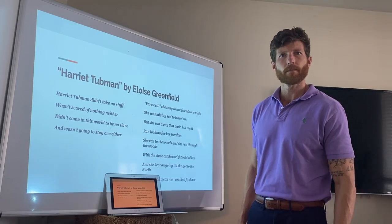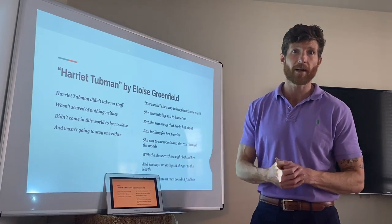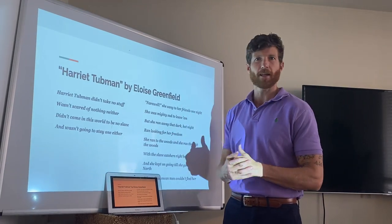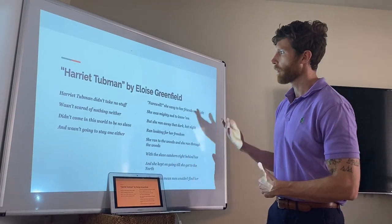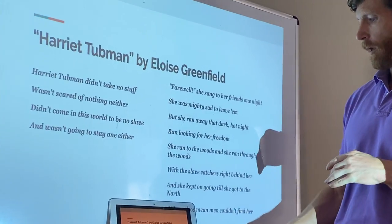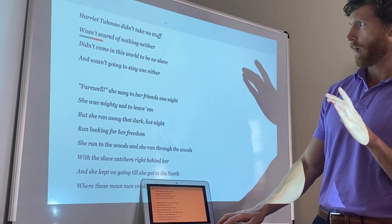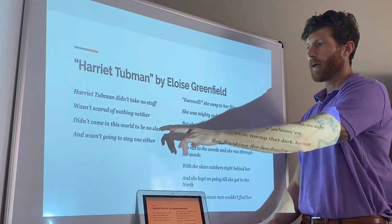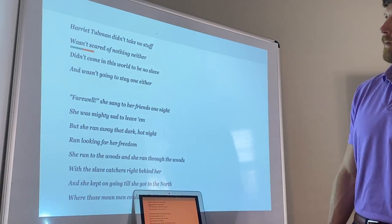Next poem. This is a poem that we've already read together in class during the Frederick Douglass unit. We're going to read it again and look for how the poet uses sound devices. So, 'Harriet Tubman' by Eloise Greenfield. I'm going to read the poem — this is the first stanza and this is the second stanza.